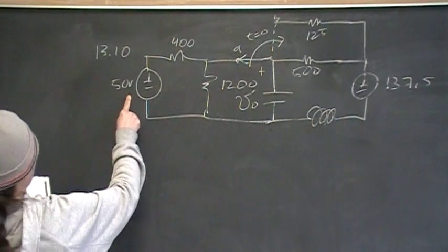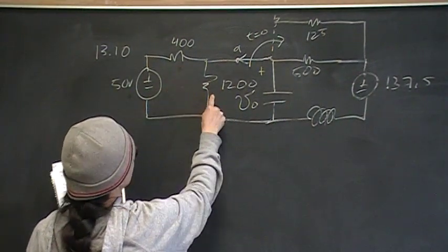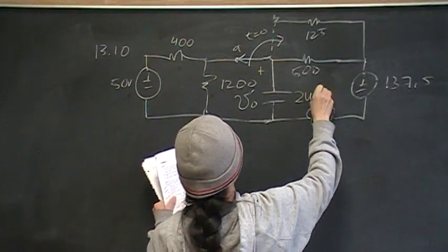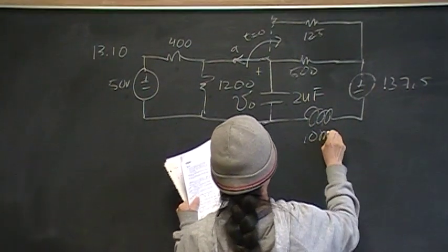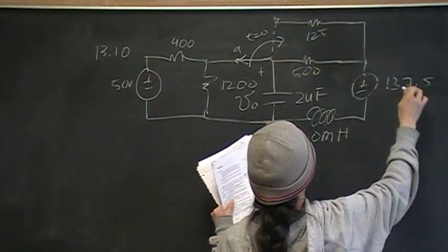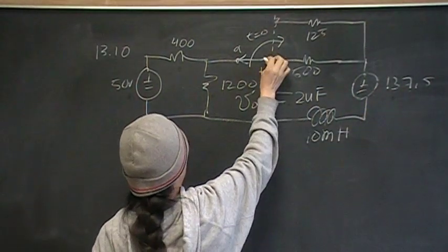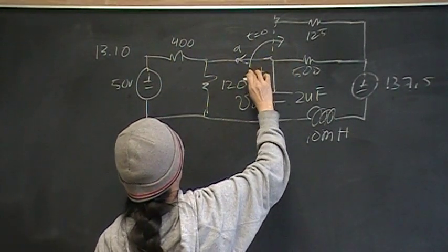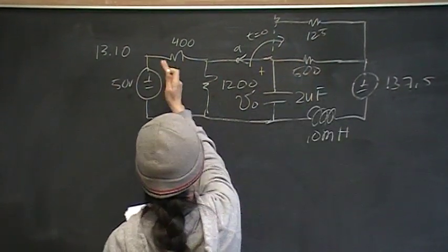So, what we have is we have this circuit here, a 58 volt independent voltage source, and this is 400 ohms resistance, 1200. This is a capacitor with value 2 microfarads, and this is an inductor with 10 milling henrys of inductance, and 500 ohms of resistance there, 125, 137.5 voltage independent voltage source. So, before the switching happens, before time zero, we have the switch here, and then when time zero comes, it switches and disconnects this section of the circuit from this section of the circuit.